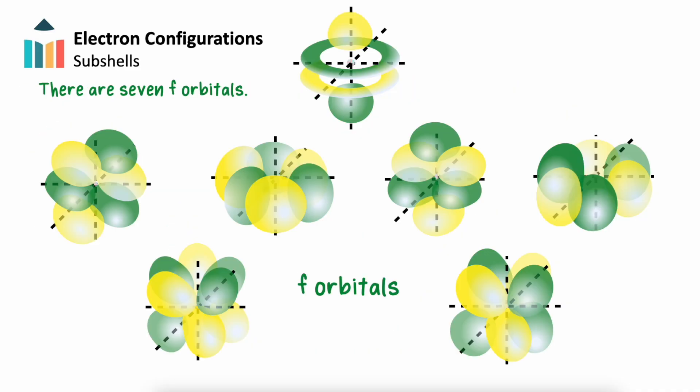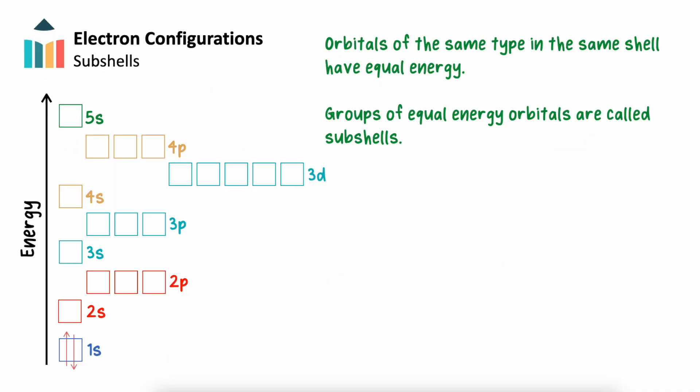F orbitals are the most uniquely shaped. There are seven F orbitals in total. We will see these the least. Orbitals of the same type in the same shell of an atom have equal energy. We call groups of equal energy orbitals subshells.